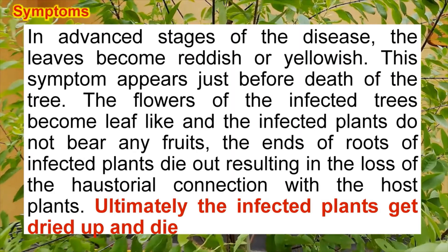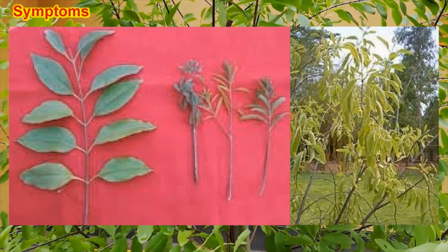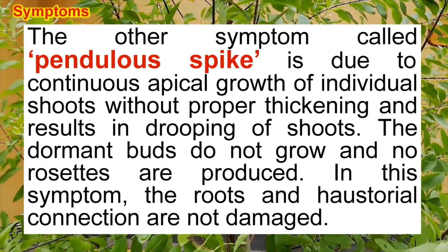Ultimately, the infected plants get dried up and die, leading to the loss of the sandalwood plant. This is a major loss to the government, as sandalwood is now the property of the government. The other type is called pendulous spike, where the branches droop down — unlike the first type where they are erect. The drooping shoots increase in number and one by one all the branches droop down, leading to the death of the sandalwood tree.